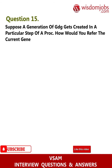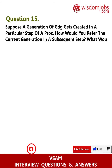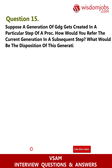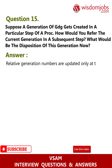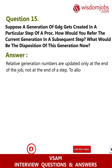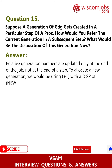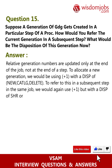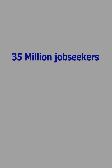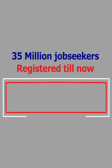Question 15: Suppose a generation of a GDG gets created in a particular step of a proc. How would you refer to the current generation in a subsequent step, and what would be the disposition? Answer: Relative generation numbers are updated only at the end of the job, not at the end of a step. To allocate a new generation, use (+1) with a DISP of (NEW, CATLG, DELETE). To refer to this in a subsequent step in the same job, use (+1) again but with a DISP of SHR or OLD.